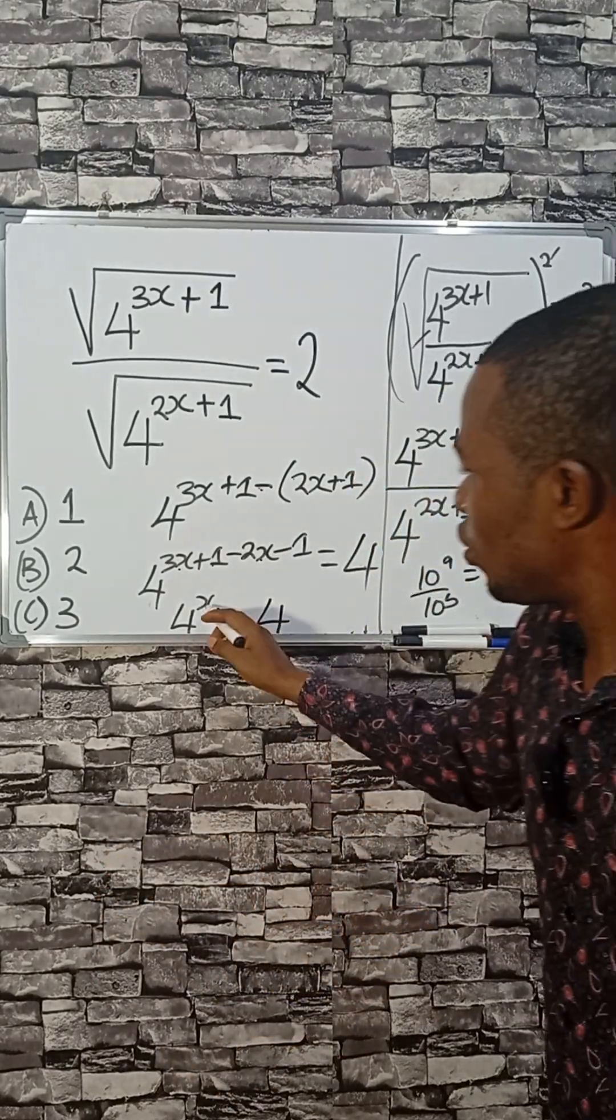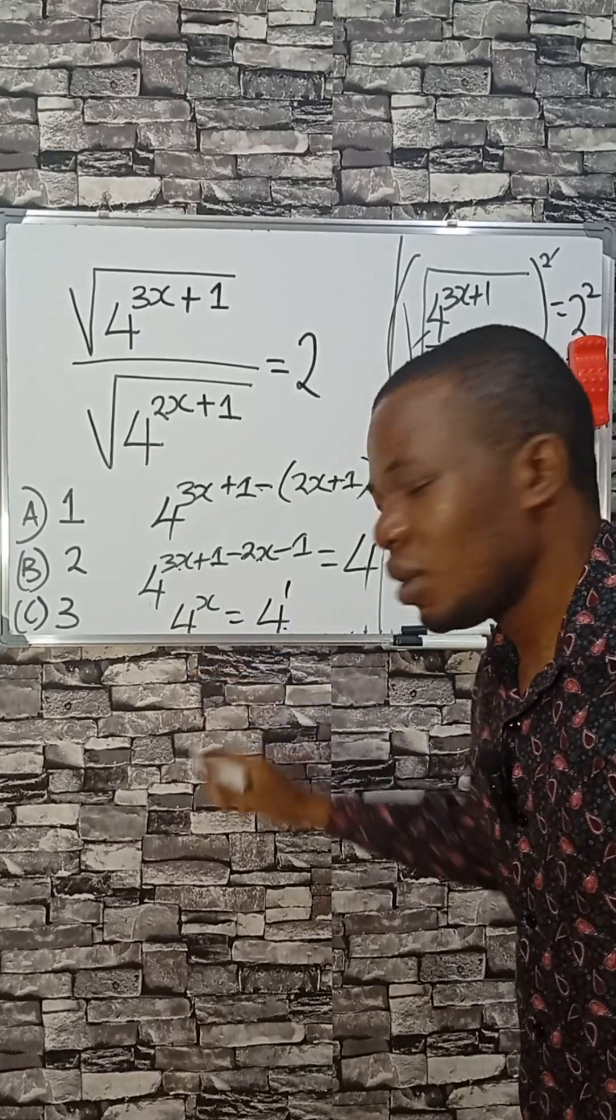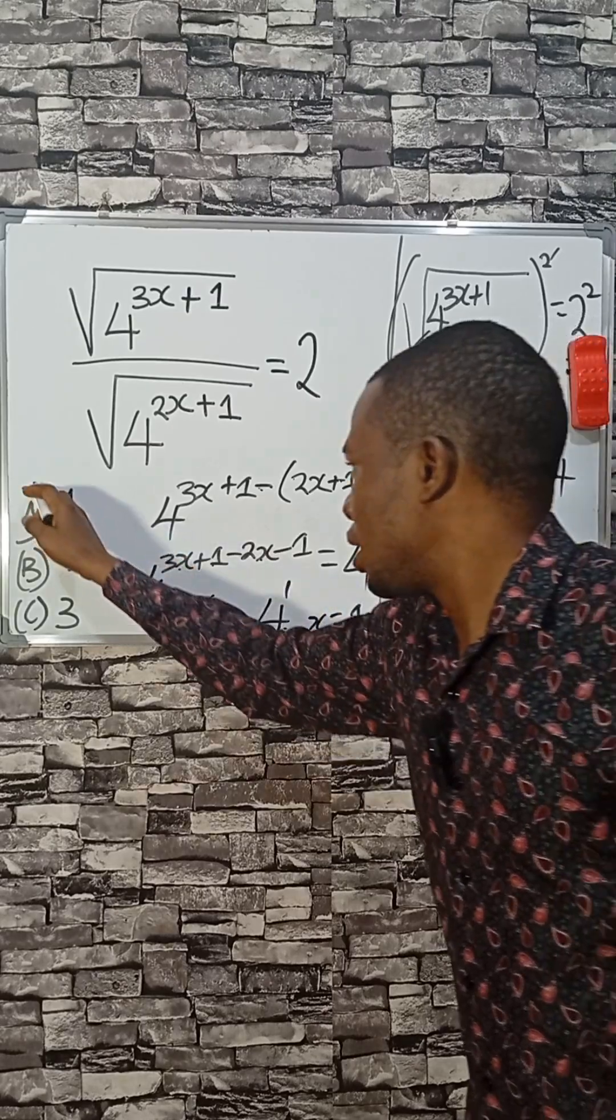We were asked to find the value of x. Of course, 4 here is the power 1. Since they have the same base, but instead, the power, therefore, x is equal to what? 1, and the A is correct.